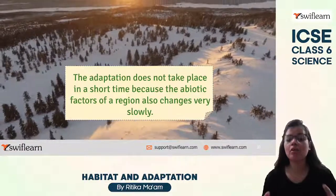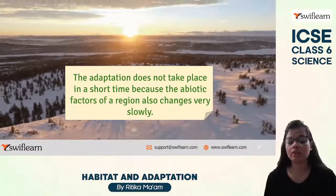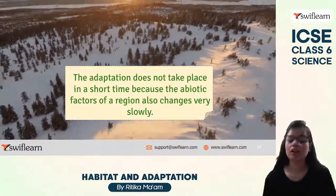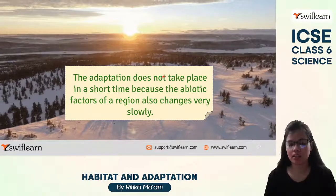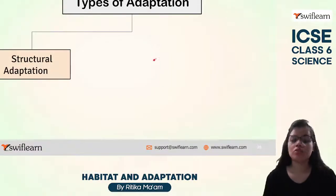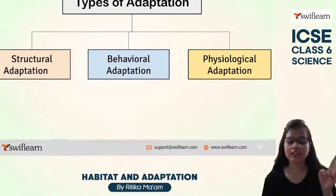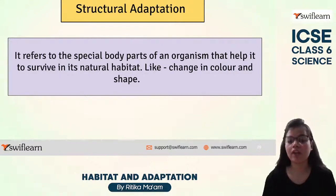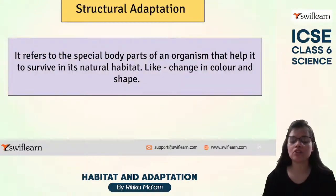Adaptation does not take place in 10 or 20 days — it takes time. The abiotic factors of a region change very slowly. Polar regions have been cold for a very long time; deserts have been hot for a very long time. Since factors change slowly, adaptation also takes a long time. There are three types of adaptation: structural, physiological, and behavioral. Structural adaptation refers to special body parts — like a change in color or shape — that help an organism survive, such as a chameleon changing its color.